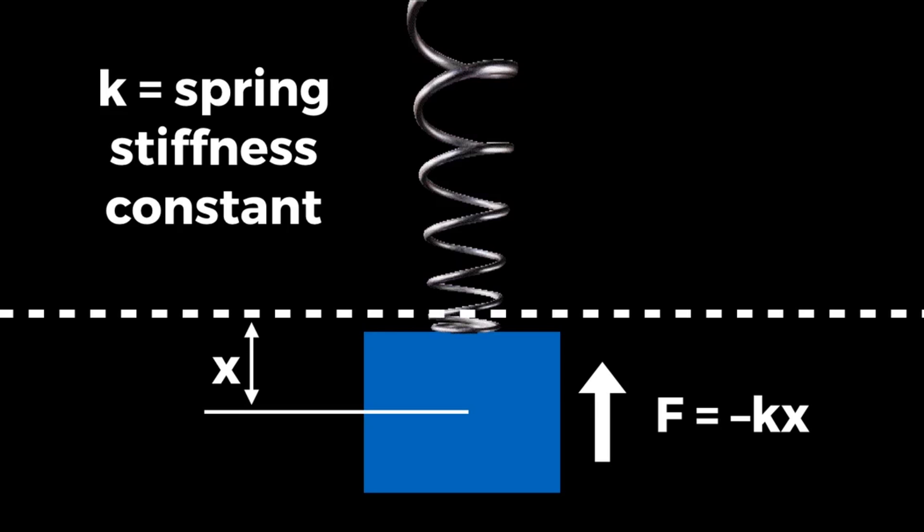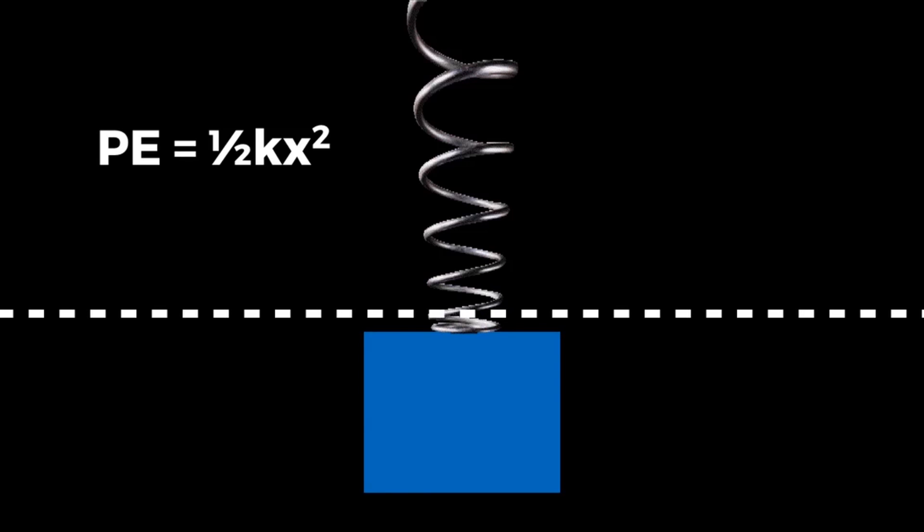The potential energy of a spring, PE, is equal to one half kx squared, where k is the spring stiffness constant and x is the distance from the equilibrium position. The kinetic energy of an object in motion is equal to one half mv squared, where m is the mass and v is the velocity. Therefore, the total energy of the system is the potential energy plus the kinetic energy: one half kx squared plus one half mv squared equals E, the entire energy of the system.